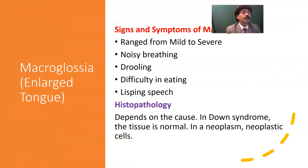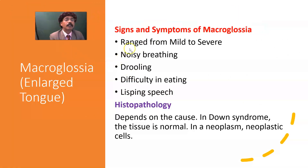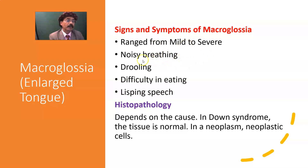What are the signs and symptoms of macroglossia? These range from mild to severe. It may be asymptomatic — just a small enlargement — or it may be a very large enlargement. You may get noisy breathing, drooling, difficulty in eating, and lisping speech.